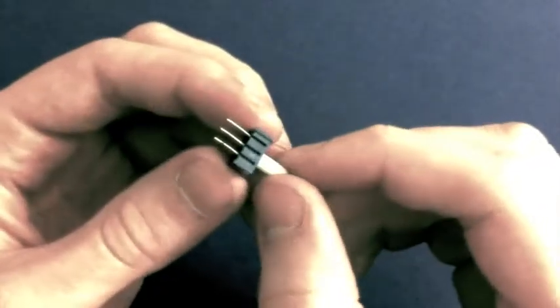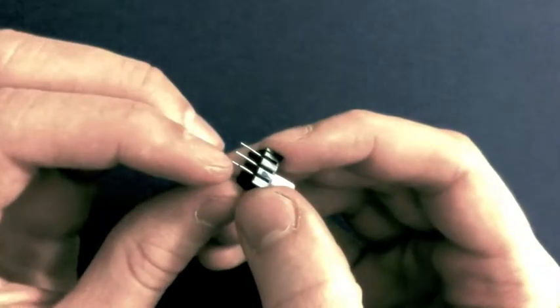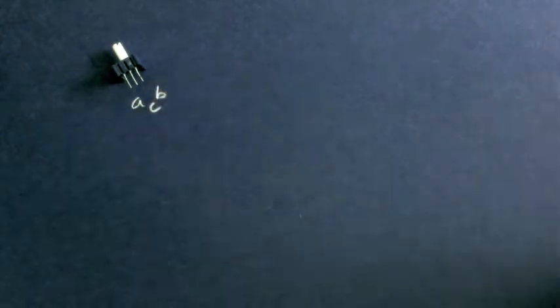So in this clip, we're going to be talking about this little thing, which is called a potentiometer. It has a knob and three little pins, and let's label those pins A, B, and C.